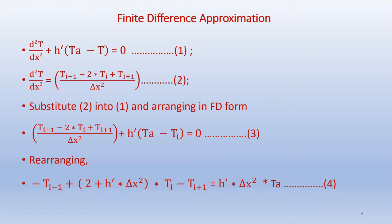We will solve this boundary value ODE problem using the finite difference method. The second derivative d²T/dx² can be represented in finite difference form as (T_{i-1} minus 2T_i plus T_{i+1}) over delta x squared, where delta x is the grid spacing. This approximation is obtained using Taylor series expansions. We substitute this into the ODE and rearrange into the form shown in equation 4.